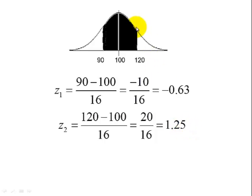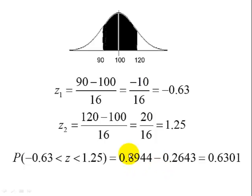Now to find the area in-between, we look up the area to the left of 1.25, write that probability down, we look up the area to the left of negative 0.63, write that probability down, and subtract the two probabilities.